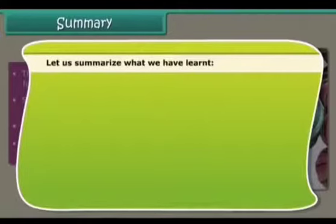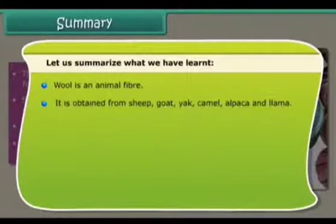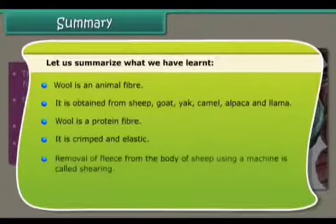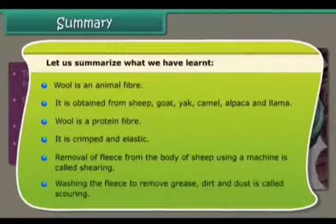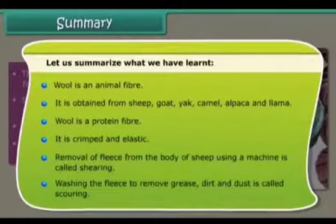Let us summarize what we have learned: wool is an animal fiber obtained from sheep, goat, yak, camel, alpaca, and llama. Wool is a protein fiber — it is crimped and elastic. Removal of fleece from the body of a sheep using a machine is called shearing. Washing the fleece to remove grease, dirt, and dust is called scouring. Thank you and have a nice day!